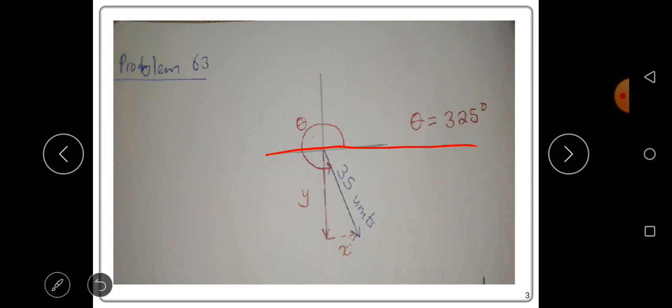The angle is 325 degrees counterclockwise in this direction. The magnitude is 35 units. They want us to find the y component and the x component.